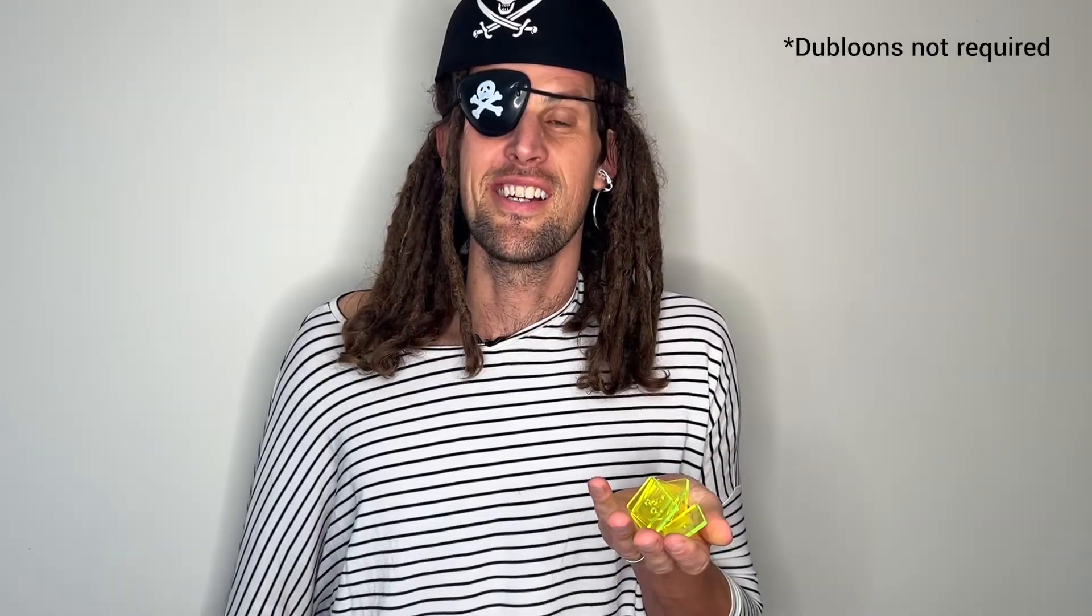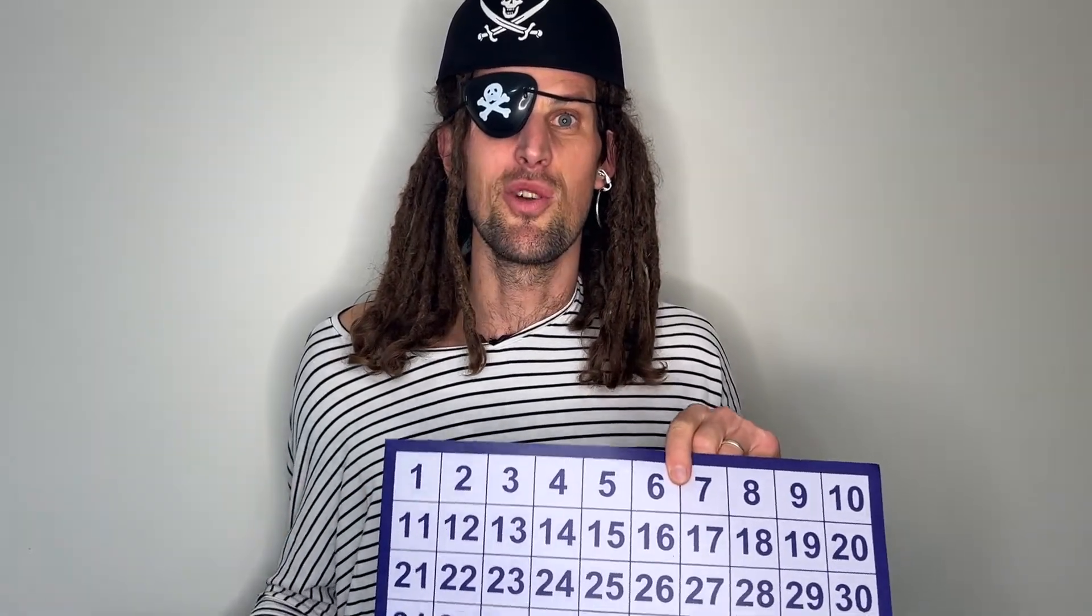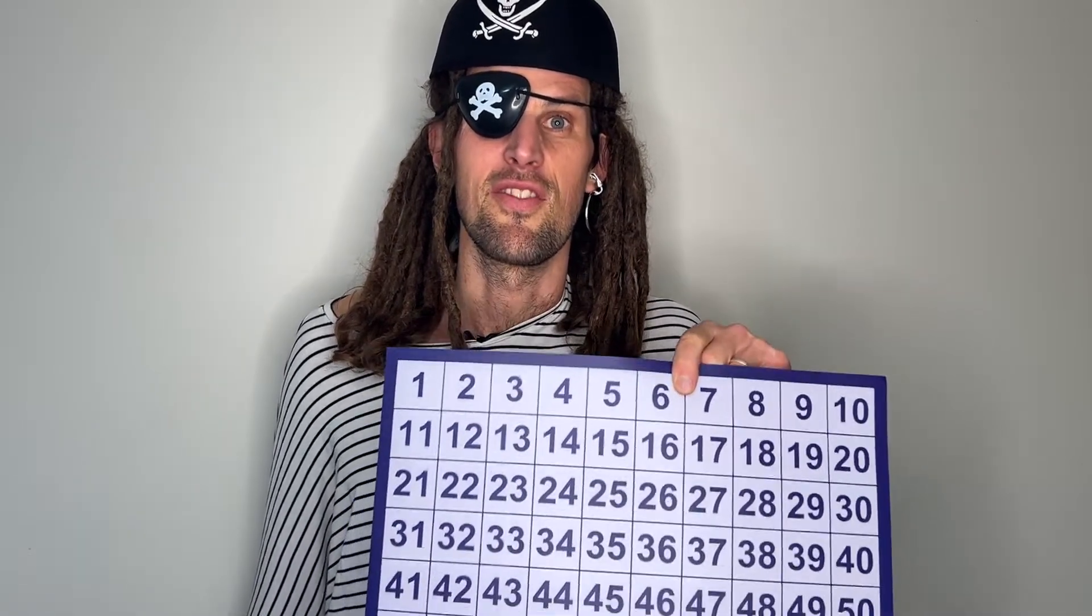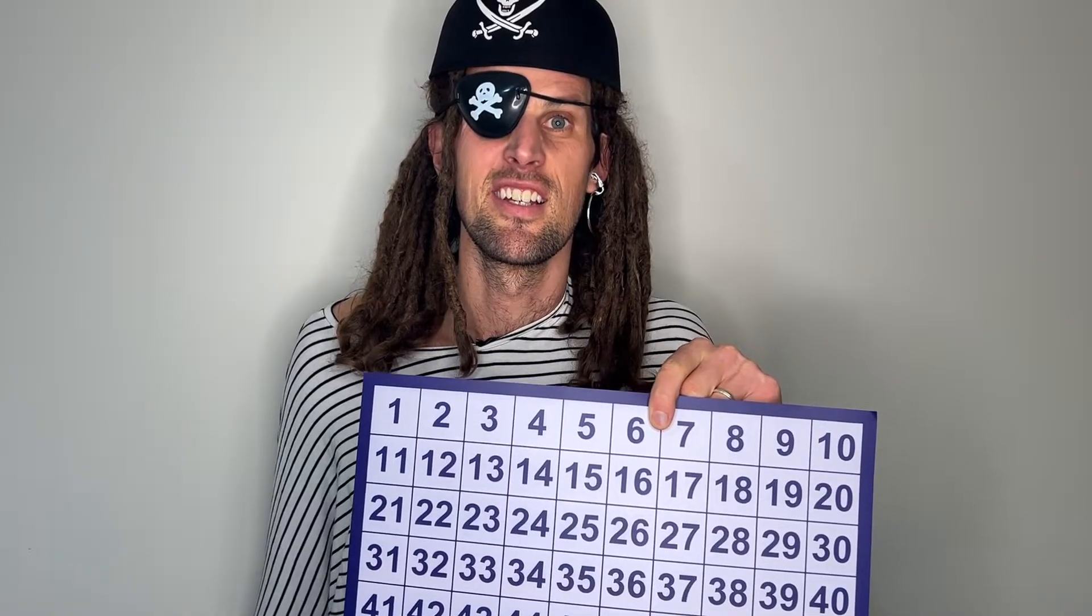The game is very simple. I've hidden gold doubloons, one on every prime number and three on every square number. Starting from zero, players add two or three to the total, move the token there. If there's a treasure they can dig it up, if not they get nothing. The person with the most booty at the end wins the game.